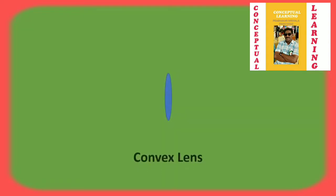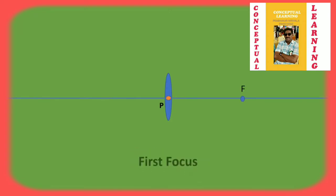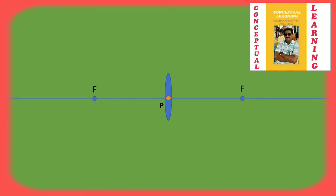For this we have a convex lens, this is the principal axis, and this is the optic centre of the lens. This is principal focus 1 and this is principal focus 2, and this is the object which is OJ.